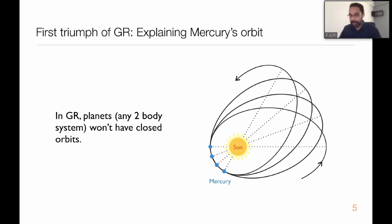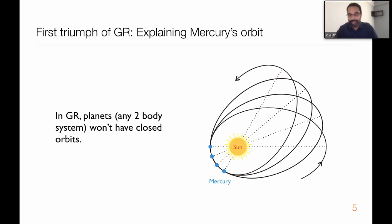Most of the precession is caused by gravitational perturbations induced by the other massive planets. But it turned out that even if you accounted for all these gravitational perturbations, there is a fraction of the precession that cannot be explained by Newtonian theory. Einstein's theory, if you solve the orbital equations using it, explained the observational data remarkably well. This was the first success that Einstein's theory accomplished.